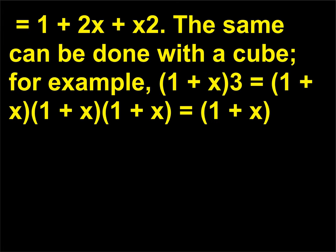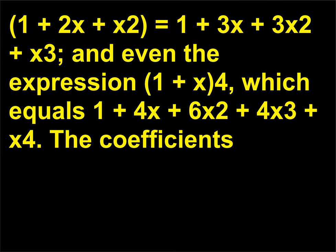The same can be done with a cube: (1+x)³ equals (1+x)(1+x)(1+x) equals 1 + 2x + x², which equals 1 + 3x + 3x² + x³. And even the expression (1+x)⁴, which equals 1 + 4x + 6x² + 4x³ + x⁴. The coefficients — the numbers in front of the x's — in the results are the connection.